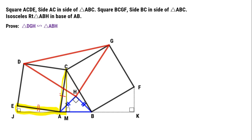Because EA equals AC, and angle JEA plus angle MAC equals 90 degrees, we can get that right triangle EJA is congruent to right triangle AMC.